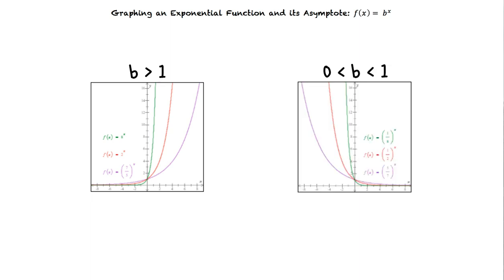We note that for each graph, there is a horizontal asymptote at the x-axis. With this information in mind, let's take a look at an example problem.